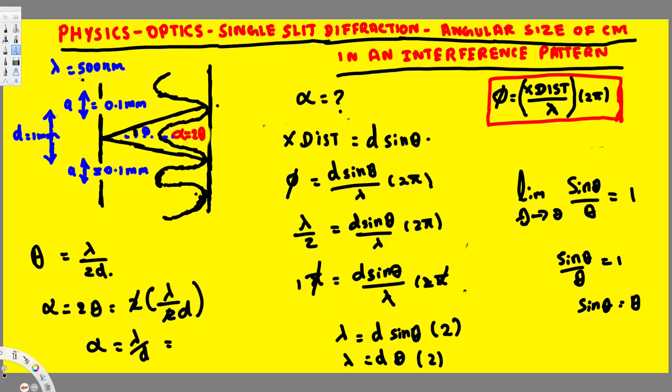And lambda we know that is 500 nanometer divided by the distance between the slits, that's one millimeter.